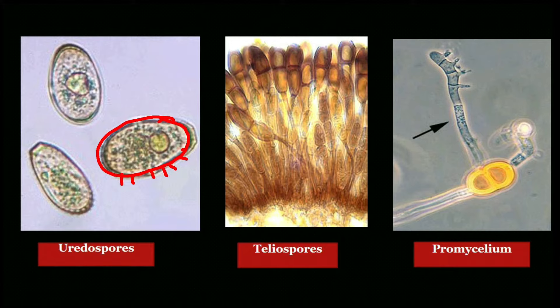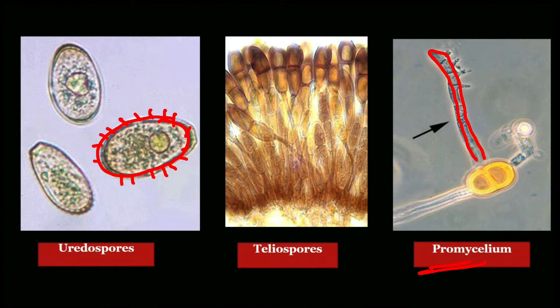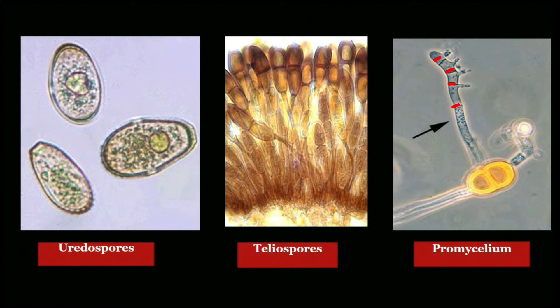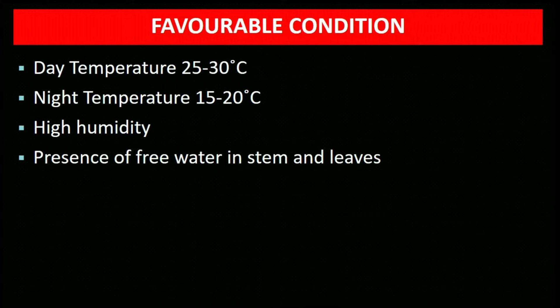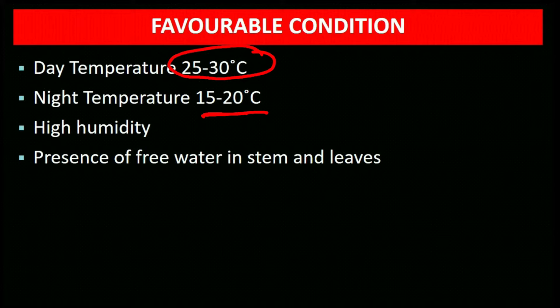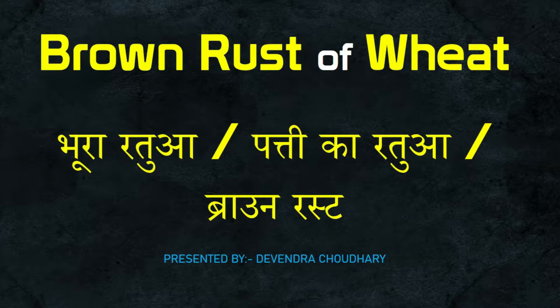The teliospore, when it germinates, forms a pro-mycelium which is septate with four cells, and one basidiospore is produced from each cell. Favorable conditions: day temperature 25–30°C, night temperature 15–20°C, high relative humidity, presence of free water on stems and leaves, and high dose of nitrogenous fertilizer.